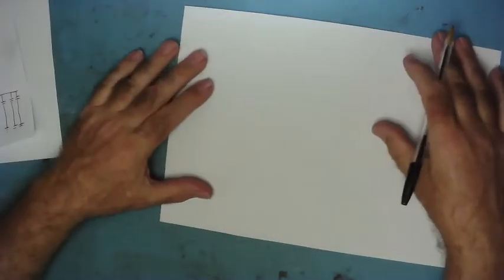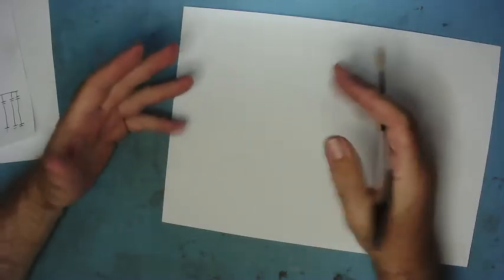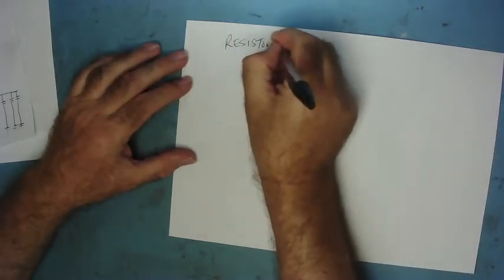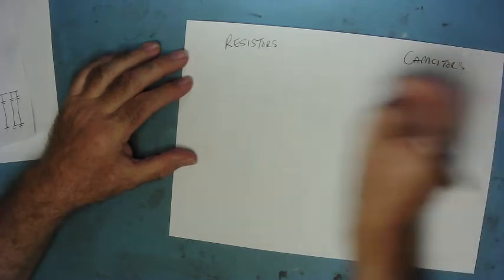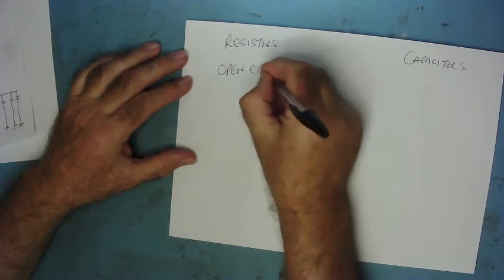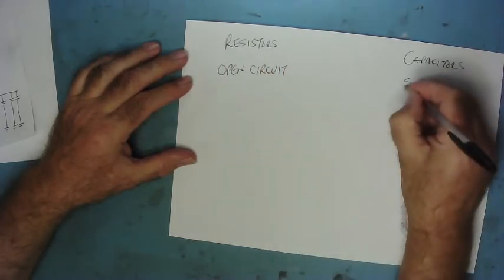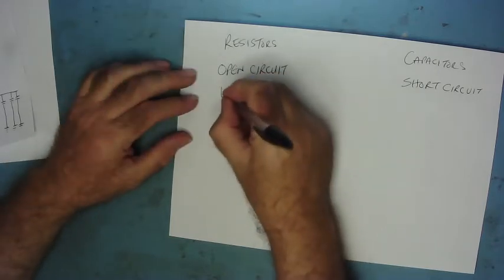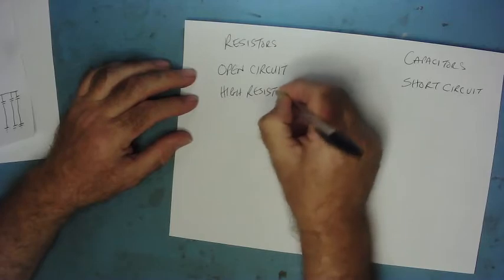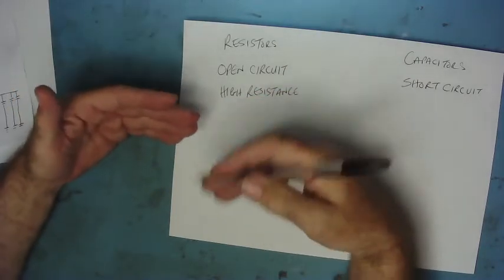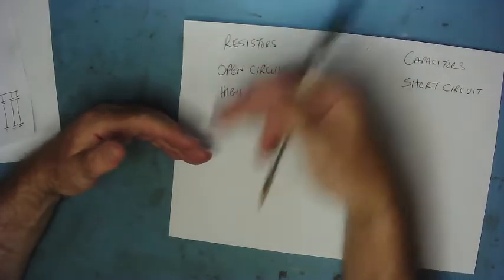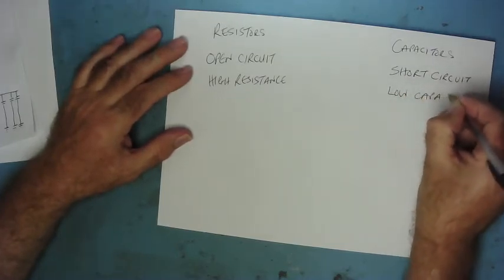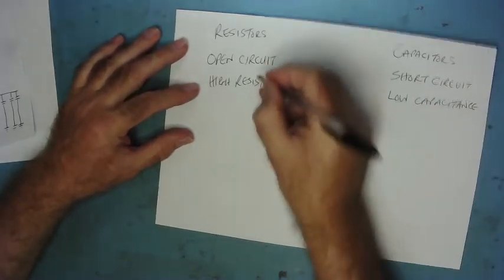The other thing I want to talk about is what happens when resistors and capacitors fail — they're the opposite, really. Resistors tend to go open circuit. Capacitors tend to go short circuit. Resistors tend to go high resistance when they fail, so the resistance increases from its rated value — say it was rated at 1 kilohm, it might go to 30 kilohms. Capacitors when they fail tend to go to low capacitance. They lose capacitance; they gain resistance — the opposite way again.